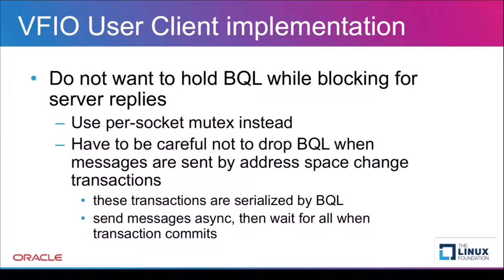The CPU thread that sends a request to the server will often wait for the server to reply. Since the requesting thread calls into VFIO holding the big QEMU lock (BQL) that serializes much of the QEMU device emulation code, we could cause performance issues if we blocked waiting for the server process to reply while holding BQL. We solve this by dropping BQL whenever possible and using our own per-socket mutex for internal locking. One situation where we cannot drop BQL is when map or demap messages are being sent during an address space change transaction. These transactions are also serialized by BQL, so VFIO user must keep holding BQL and send the requests asynchronously. When the address space transaction commits, we then wait for the youngest request to complete, which indicates all requests have completed since requests are replied to in the order in which they are sent.